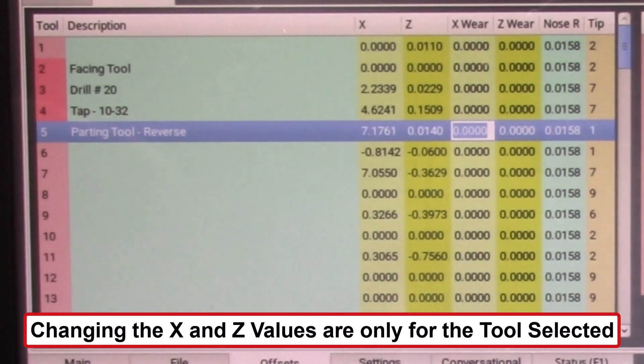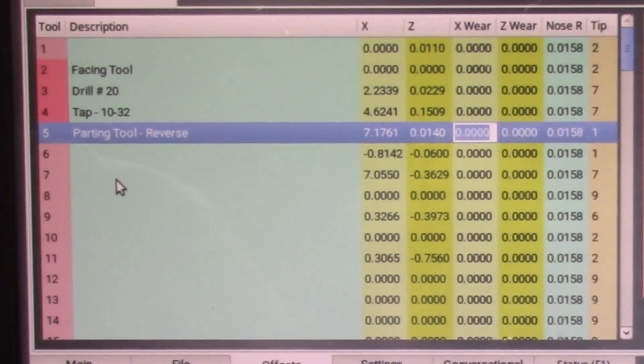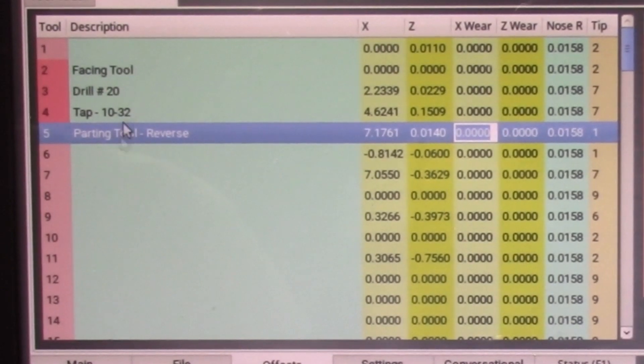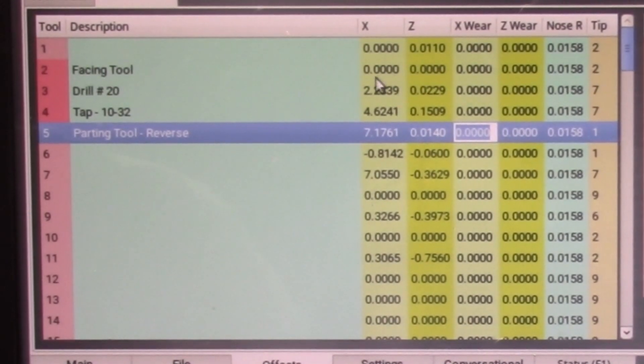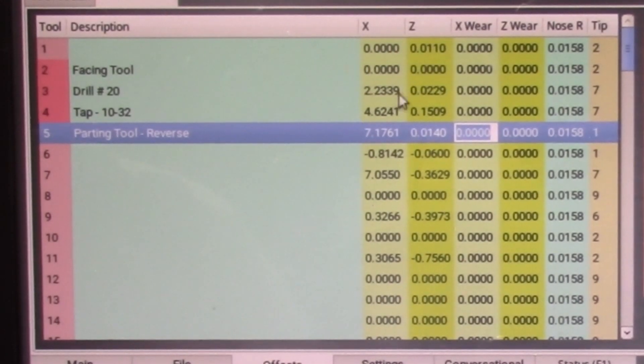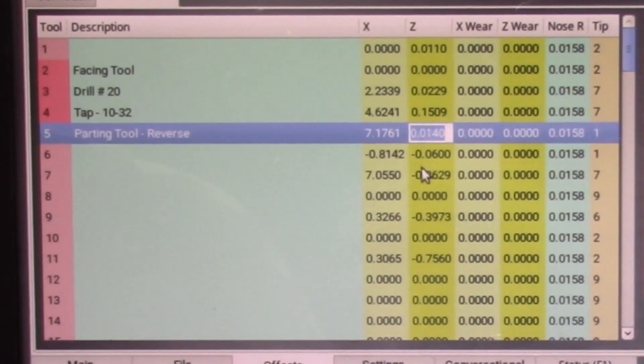Likewise you can change the X position also if you wanted to in the system, but again I don't normally need to do that. So here's some of the changes you can make to allow for system parameters. In this case what I'm doing is I'm balancing this tool against the facing tool. You notice my facing tool these values are 0. So these are 0 relative to the machine position. And this is the difference and change between the tools and the facing tool. So what I did here is I reduced this length by one and a half thousandths of an inch.